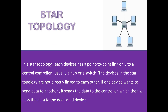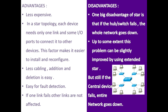Next we have Star Topology. In a star topology, each device has a point-to-point link only to a central controller, which is usually a hub or a switch. The devices are not directly linked to each other. If one device wants to send data to another, it sends data to the controller, which then passes the data to the dedicated device. Advantages: it is less expensive, each device needs only one link and some IO ports to connect, making it easier to install and reconfigure. Less cable links are required, addition and deletion of devices is easier, fault detection is easier, and if one link fails, the other links are not affected.